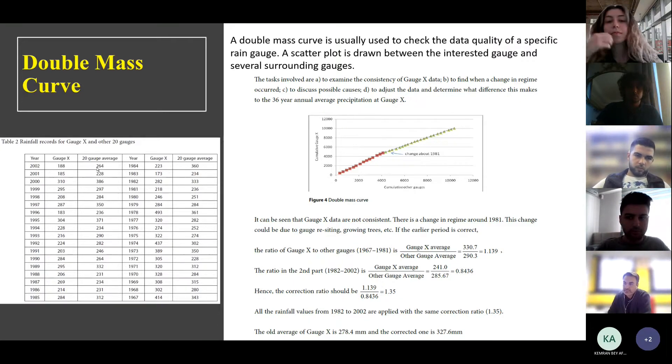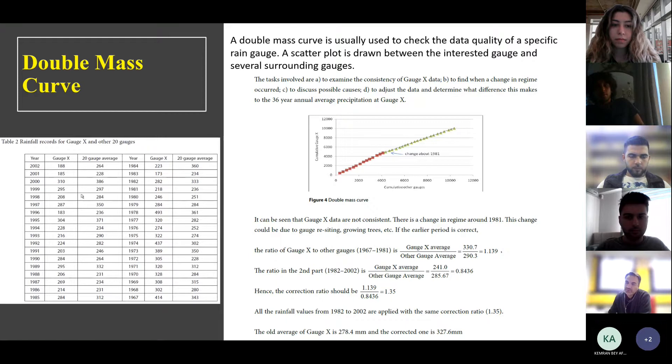In this example, we have 21 gauges in a catchment. One of them is called gauge X. And the remaining are called gauge 1, 2, 3, up to 20 gauges. And we have measurements since 1967 at all these gauges up to 2002. And the hydrologists thinks that it is possible to have some problem in gauge number X, and he's interested to check if there is such a problem. And if the answer is yes, to adjust the measurements. The double mass curve was used to solve this problem. And the steps of solution is shown here.